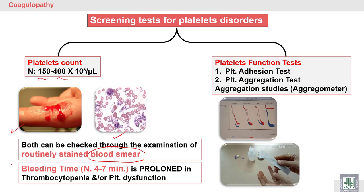Bleeding time is a very simple test. We use filter paper to dry the blood spot from the thumb or finger every 15 seconds, and finally we collect the time of stopping of the bleeding from the finger — this is the bleeding time.